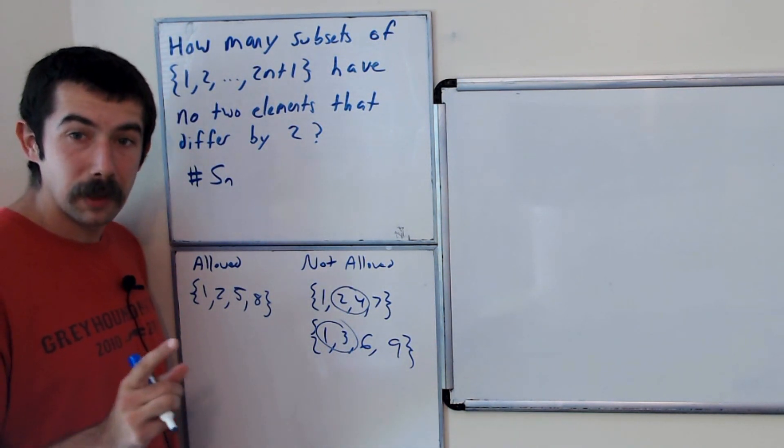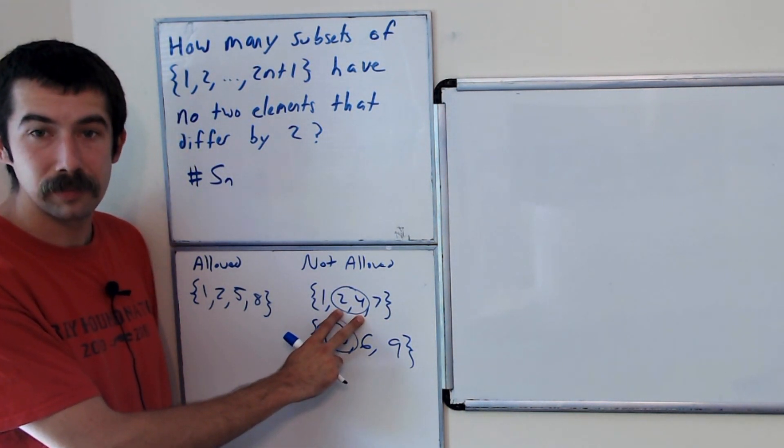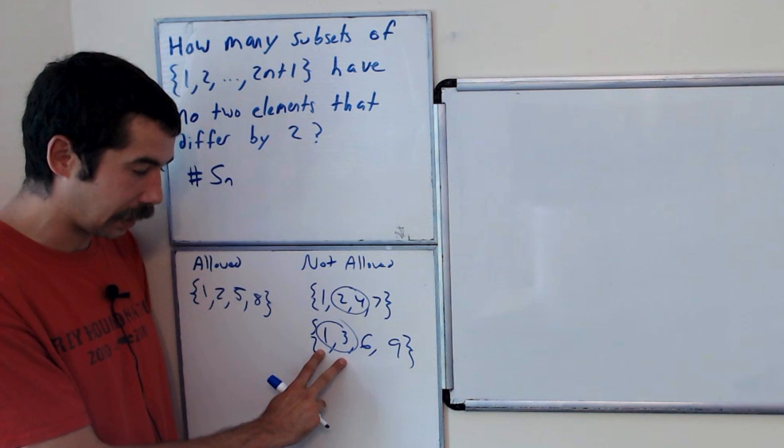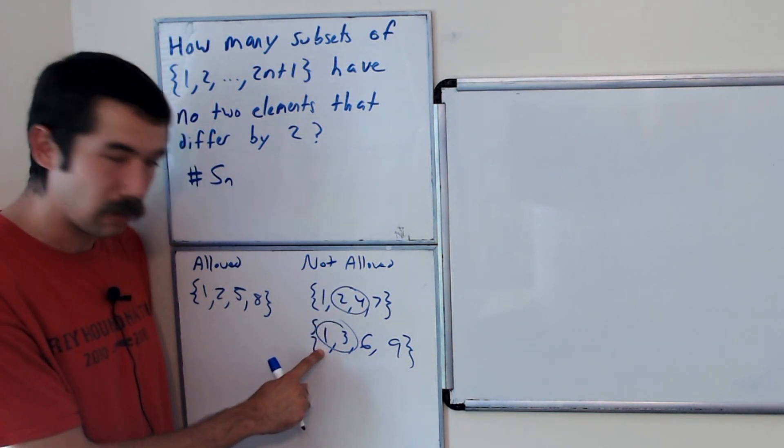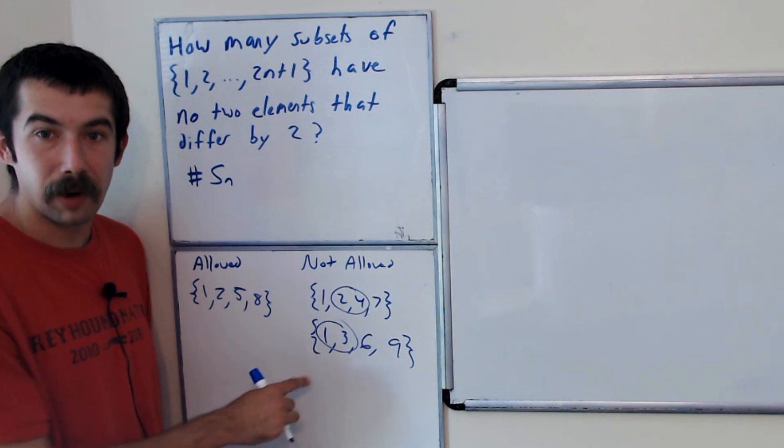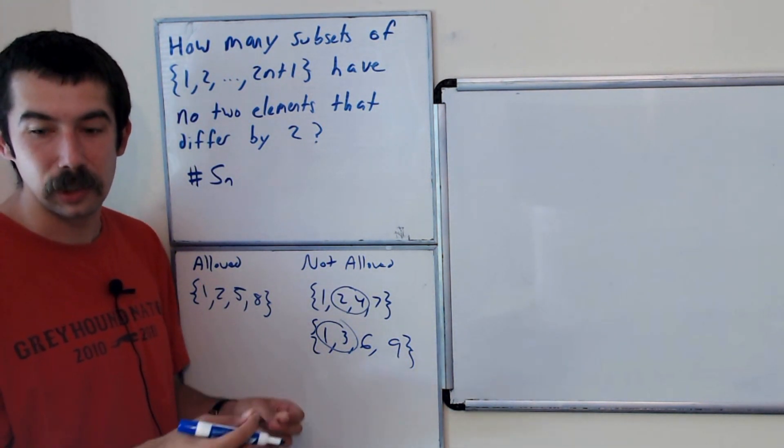So what you should note is if two numbers differ by exactly 2, so here 2 and 4 and here 1 and 3, then they're either both even or both odd. Right, it's impossible to have an even and an odd number differ by exactly 2 from each other.